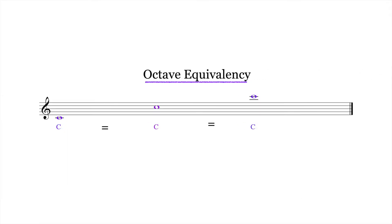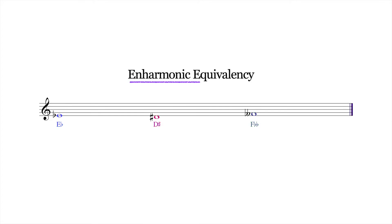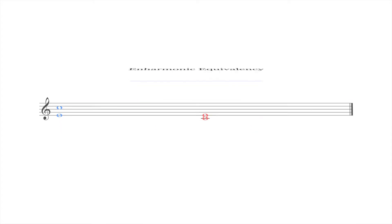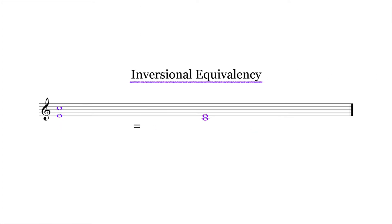Just as we speak of octave equivalency and enharmonic equivalency, we can speak of inversional equivalency, which holds that intervals are the same when inverted. The following two intervals, for instance, which are related by inversion and span eight and four semitones respectively, are considered identical.